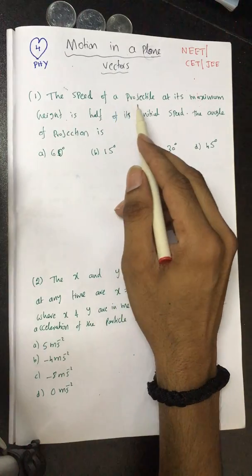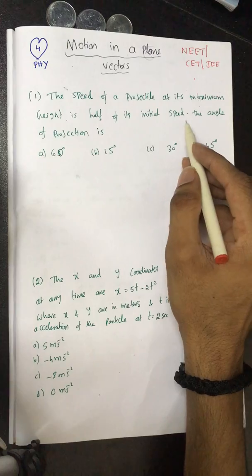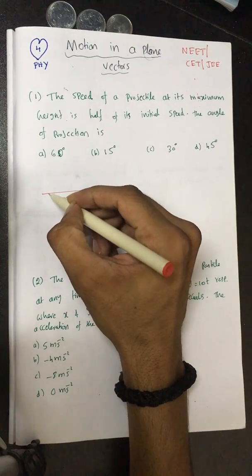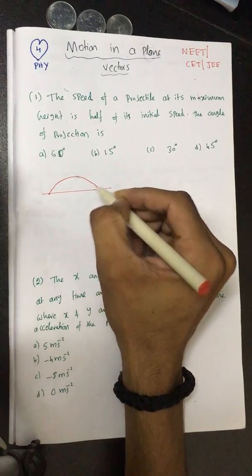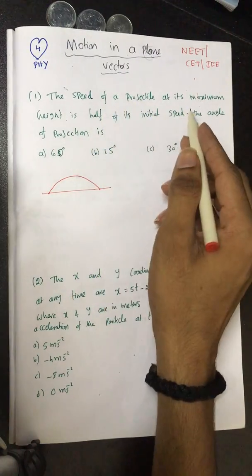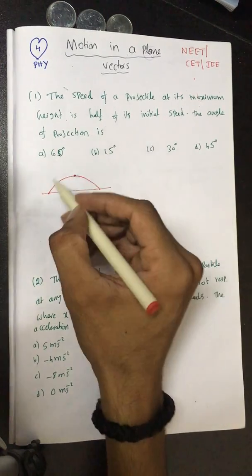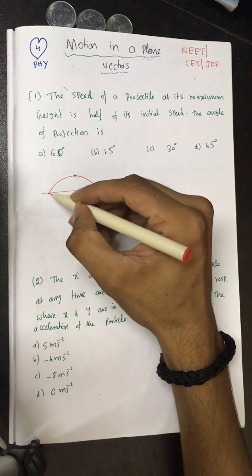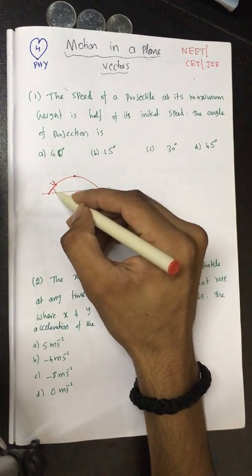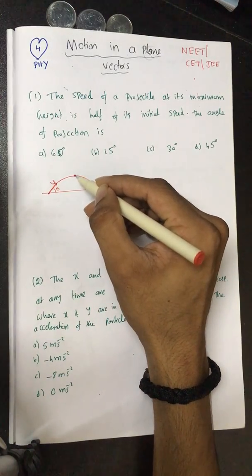The speed of the projectile at its maximum height is half of its initial speed. What is the angle of projection? We have a projectile projected at a certain angle, following a parabolic path. It is projected with initial velocity u at angle theta.